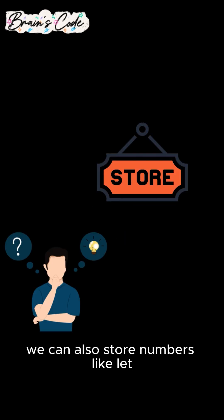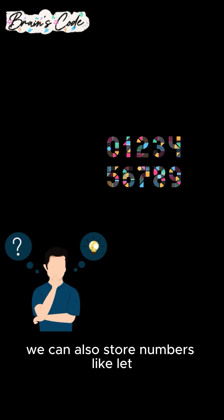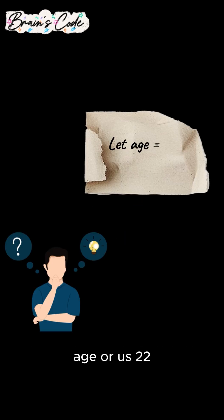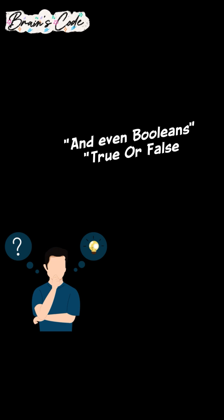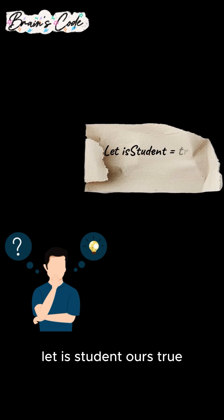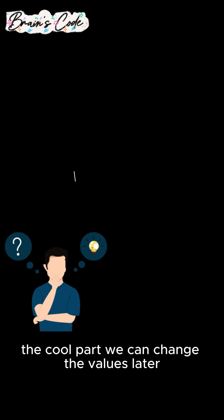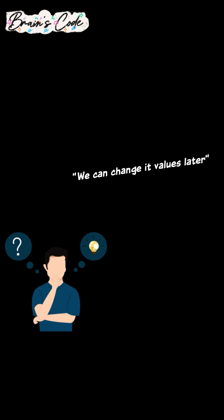We can also store numbers, like let age = 22, and even booleans, which are just true or false. Let isStudent = true. The cool part? We can change the values later.